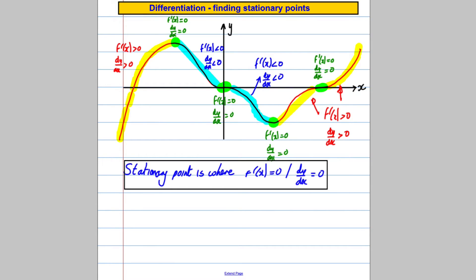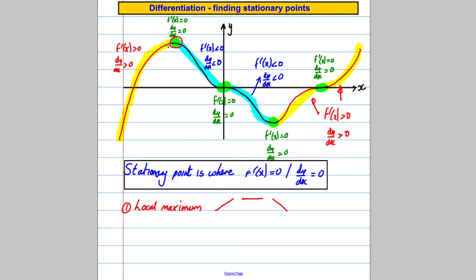There are three types of stationary point. Type one: a local maximum. 'Local' just means in the close-by region. This point must be a maximum — the y value is bigger than all the other y values very close to it. A local maximum has a positive gradient, then at the point itself a zero gradient, then a negative gradient. That's a local maximum, and it looks like an arch or hill shape.